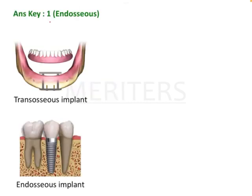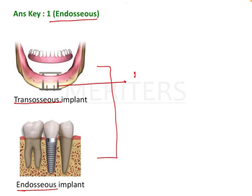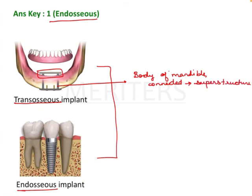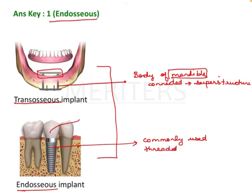So the answer is endosseous implant. Now let's look at the difference between an endosseous implant and a transosseous implant. A transosseous implant has a connected plate — they go to the body of the mandible and are welded or connected together with a bar which is the superstructure. It was indicated only for the mandibular arch and is an older design no longer used. Endosseous implants are the commonly used implants currently — they are threaded and support the prosthesis.